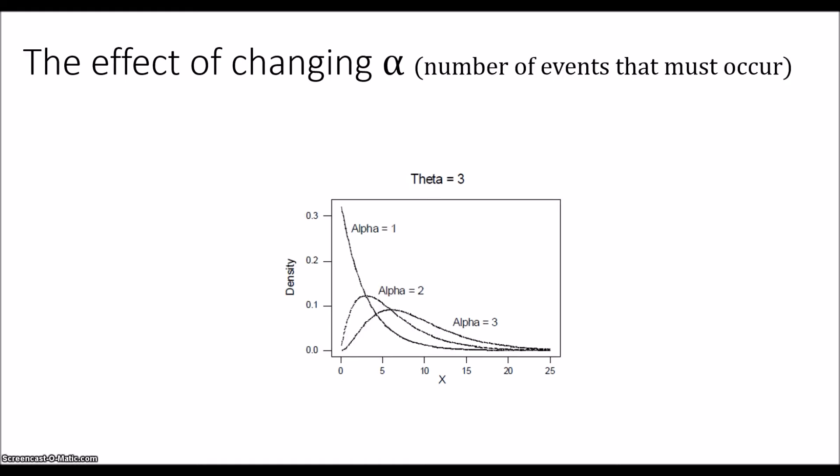And if we change the value of α, so now we're saying we want to see a different number of events occurring. Here I'm choosing a constant value of θ. So the average time to the first event is 3. And we can see the effect of changing α. So we want to see more events. Our distribution gets shifted more to the right. And notice that when α equals 1, that is actually an exponential distribution.